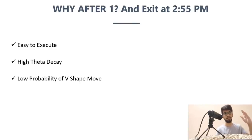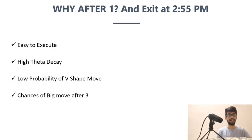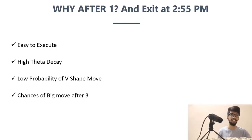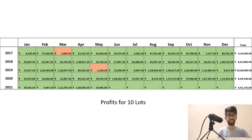Entering late also avoids the situation where the market goes up in the morning then sells off in the afternoon. And we exit at 2:55 because after 3 pm, volatility increases which pushes up option prices, and the market may start trending in one direction. So we're out at 2:55 for both these reasons. It's just a two-hour execution. Now we'll look at the data regarding the same.